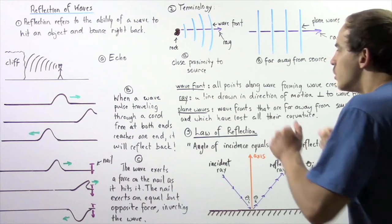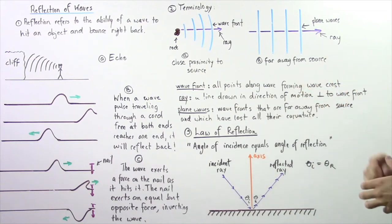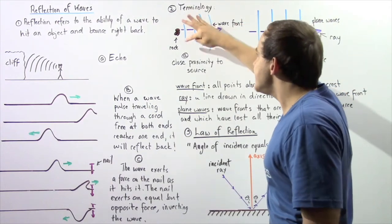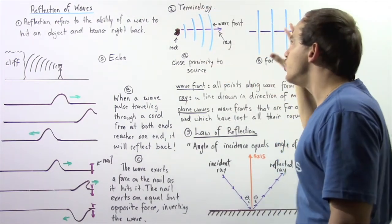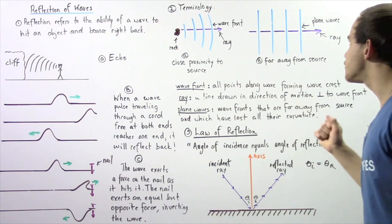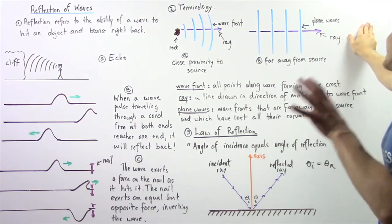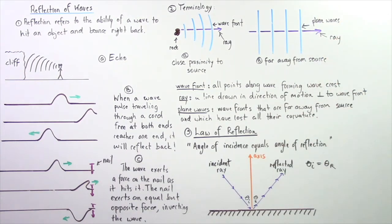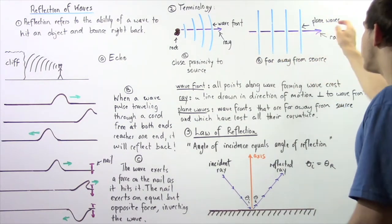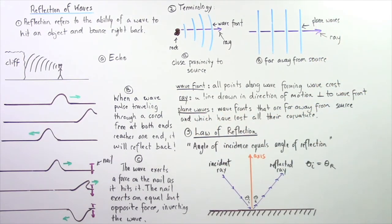If we move far away from where the rock hit the water — far from the source — the wave fronts will no longer be curved. They will be parallel to one another. These wave fronts are known as plane waves. If we draw a line pointing in the same direction as the wave's motion and perpendicular to these plane waves, we get a ray as shown. Plane waves are wave fronts that are far from the source and have lost all their curvature, becoming parallel to one another.